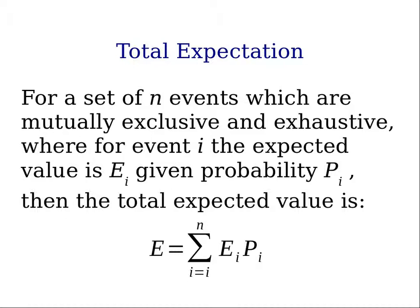If for event i, we know the expected value of that event, E_i, and the probability of that event i occurring is P_i, then the total expected value for the system is the sum across all events, from i equal 1 to n, of the expected value of each event times the probability of each event.